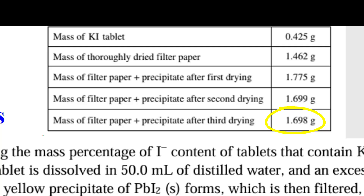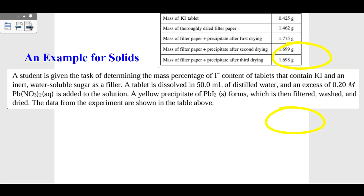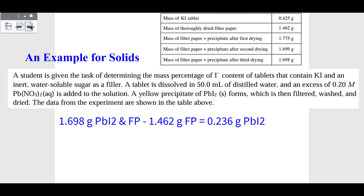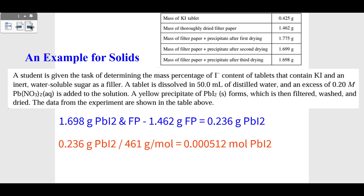Since we have filter paper and precipitate together, we subtract the filter paper mass of 1.462 grams, giving us 0.236 grams of PbI₂. You can see I rounded to three significant digits and put my units — grams — and what it's assigned to, PbI₂. Now that we have 0.236 grams of PbI₂, what do we do with grams? We always divide by the molar mass. The molar mass of PbI₂ is 461 grams per mole, so 0.236 grams ÷ 461 grams/mol gives us 0.000512 moles of PbI₂.